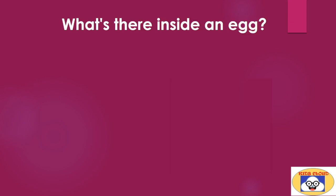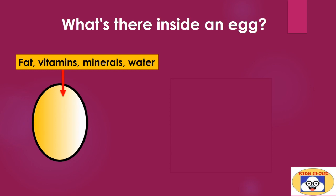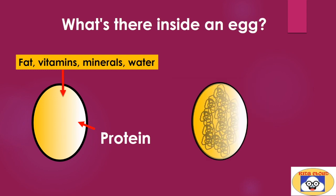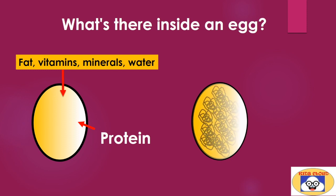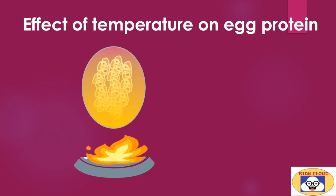Do you know what's inside an egg? An egg contains various nutrients including fat, vitamins, and minerals along with water, but predominantly it contains protein. At normal temperature, or in the liquid state, proteins inside the egg are entangled, curled, and in a compact form. These proteins are embedded in water and can freely move.